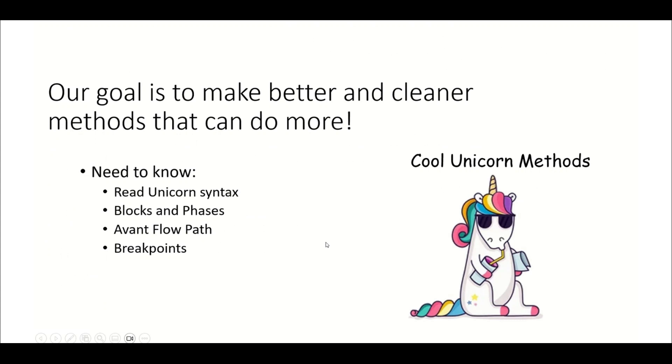Hi everyone, thank you for joining me. Our goal is to be able to make those cool unicorn methods and we want to do this because it'll make our methods run better and cleaner. That will allow us to do a lot more with our methods. In order to be able to do this we have to be able to do four things: read unicorn syntax, understand blocks and phases, be aware of many of the pitfalls of the Avant flow path, and there are really only a few.